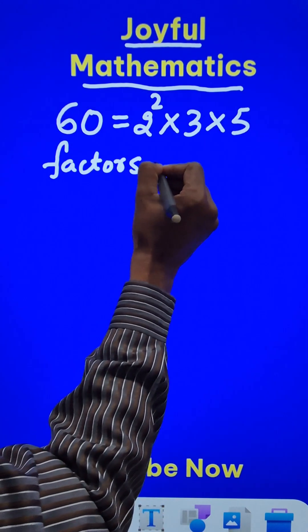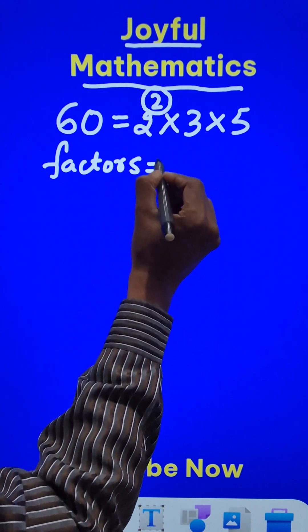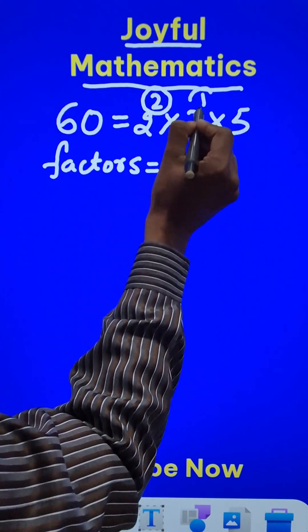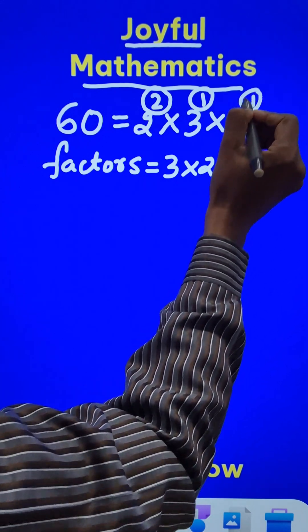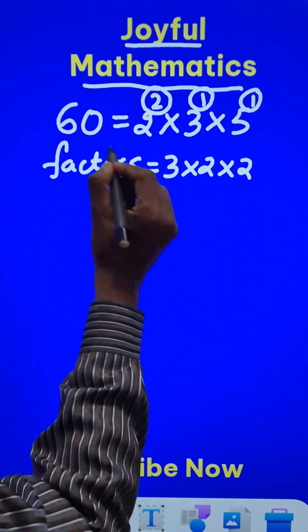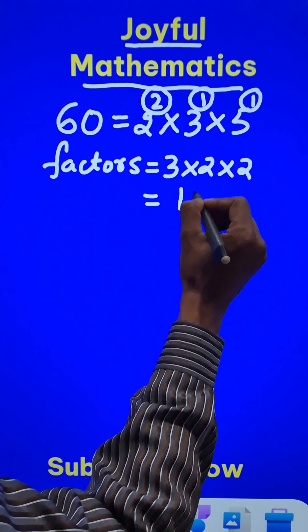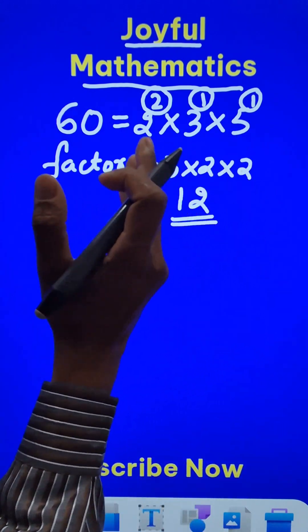The number of factors of 60: the exponent here is 2, so increase that by 1 you get 3. The exponent here is 1, increase this by 1 you get 2. And increase this exponent by 1 you get 2. And therefore the number of factors of this number 60 are 3 times 2 is 6, 6 times 2 is 12. So 60 has 12 different factors.